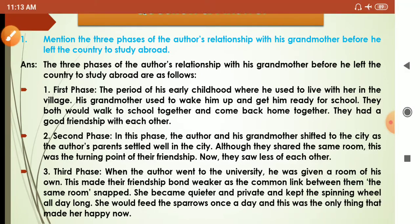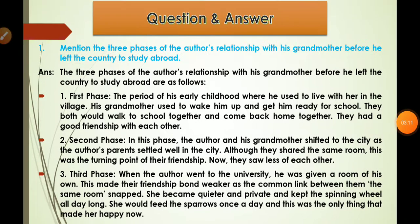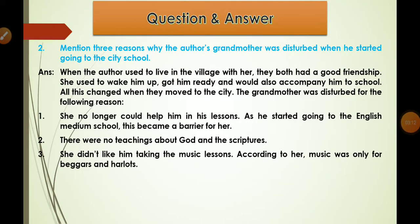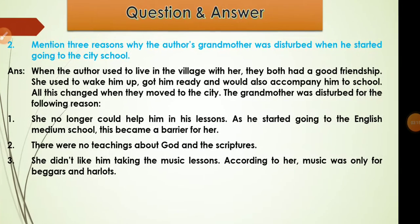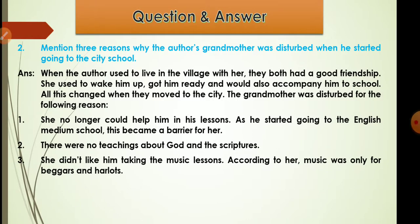These are the three phases we have understood. Next question: mention three reasons why the author's grandmother was disturbed when he started going to the city school. When the author used to live in the village with her, they had a good friendship — she used to wake him up, get him ready, and accompany him to school.